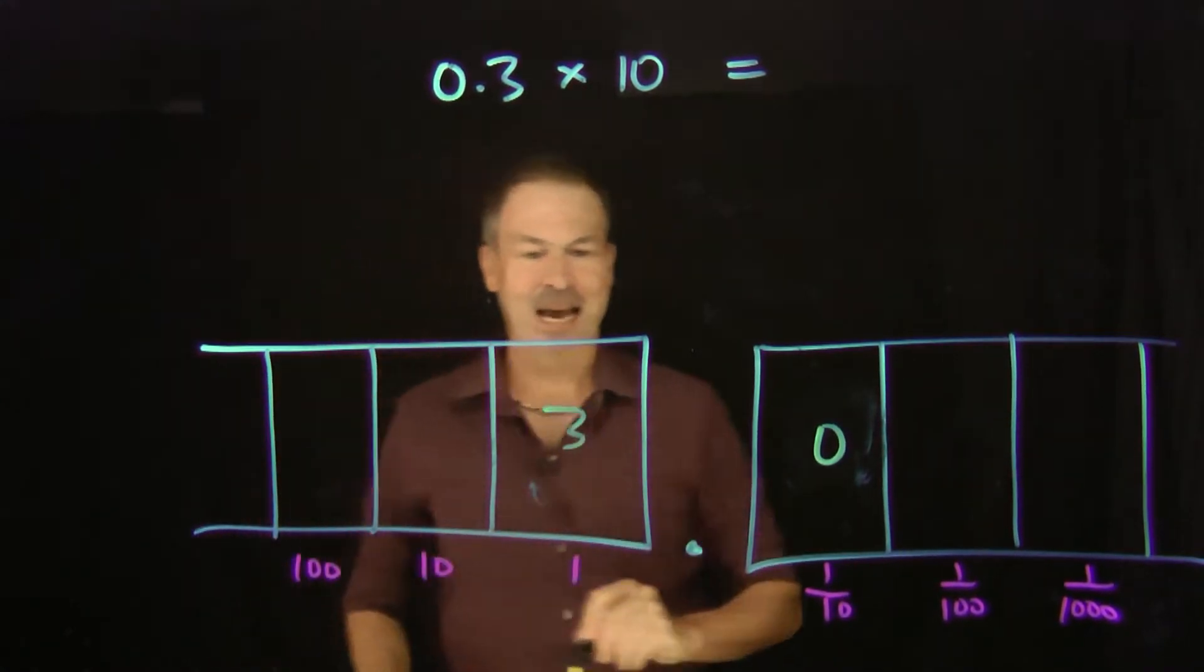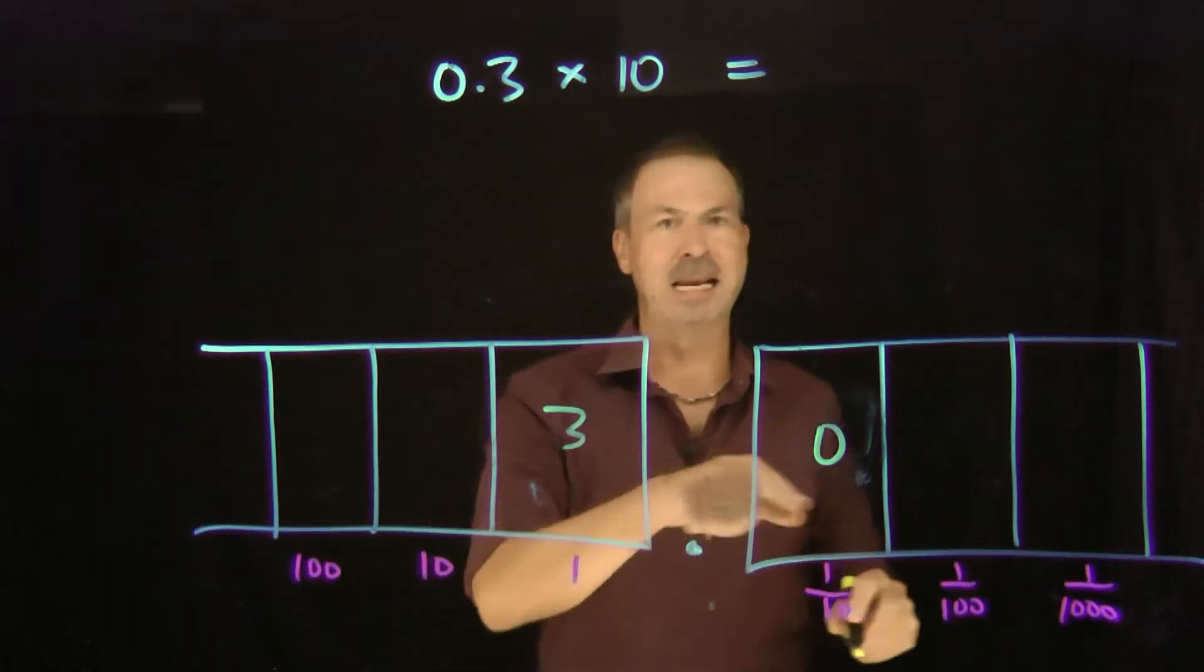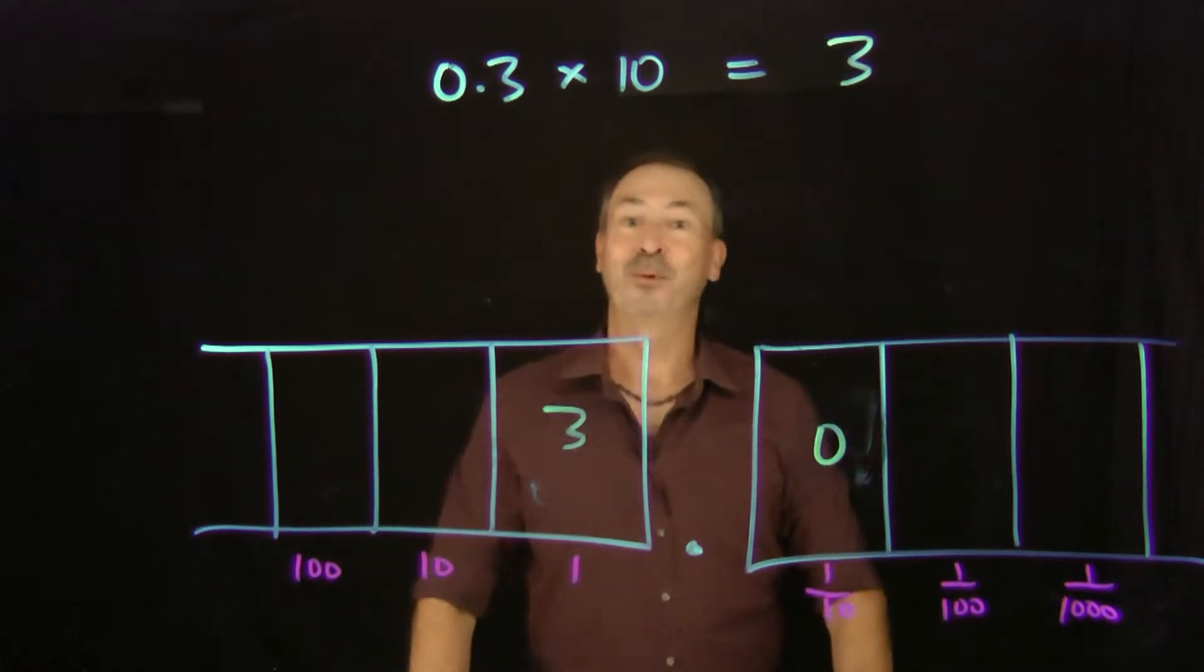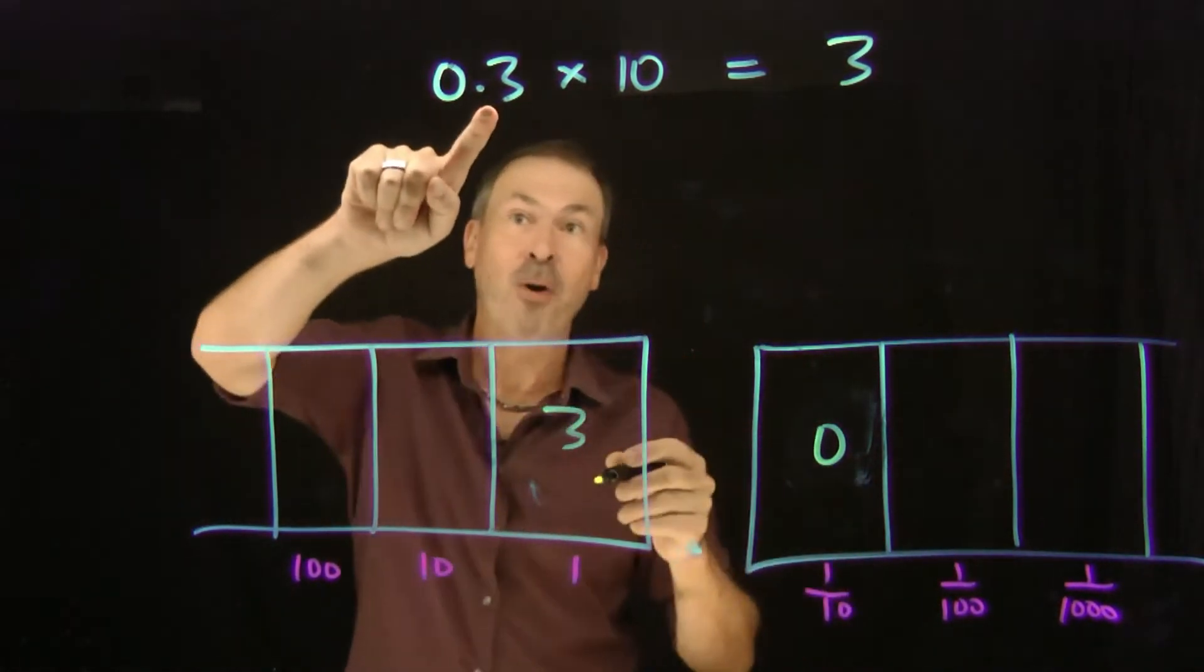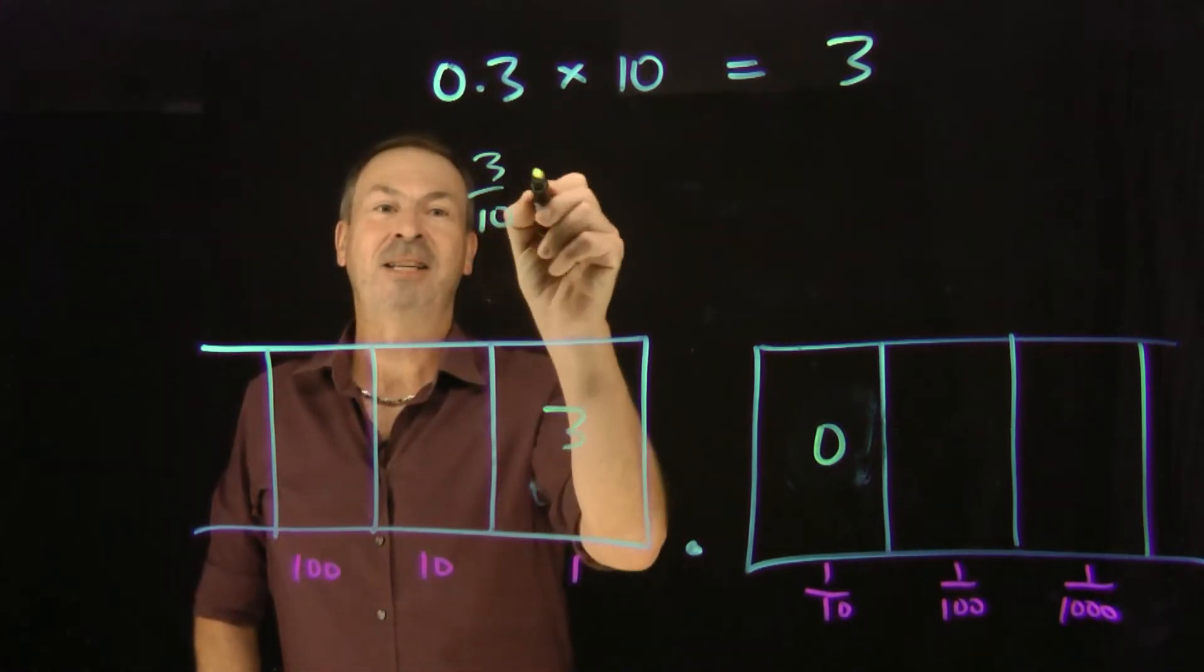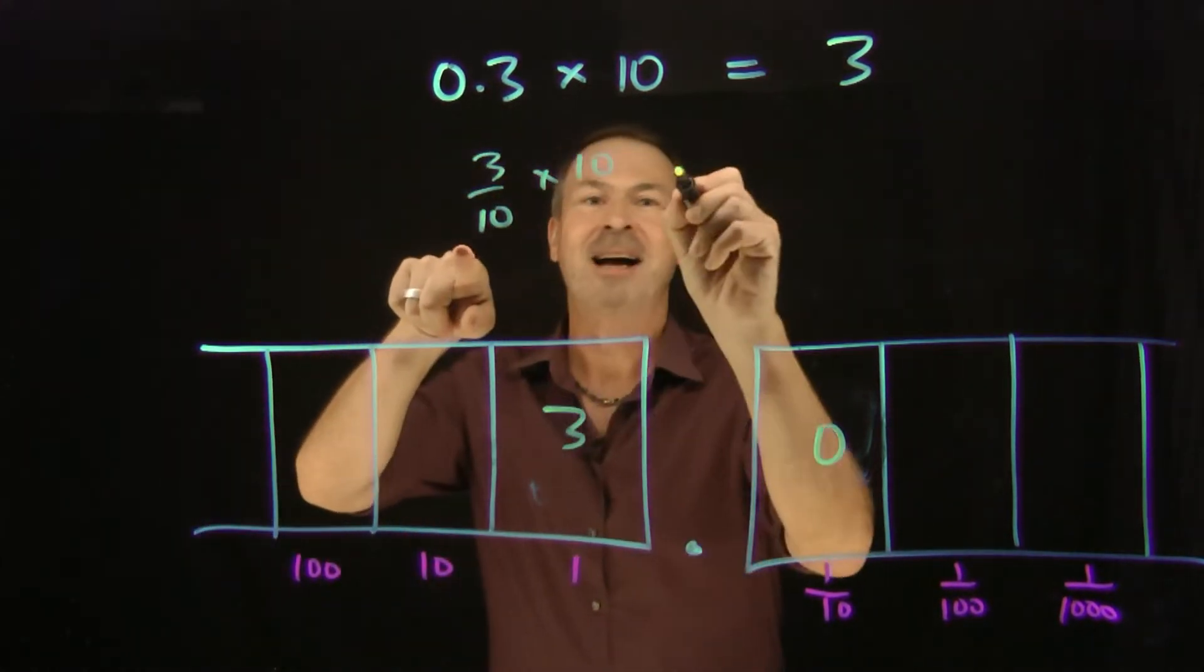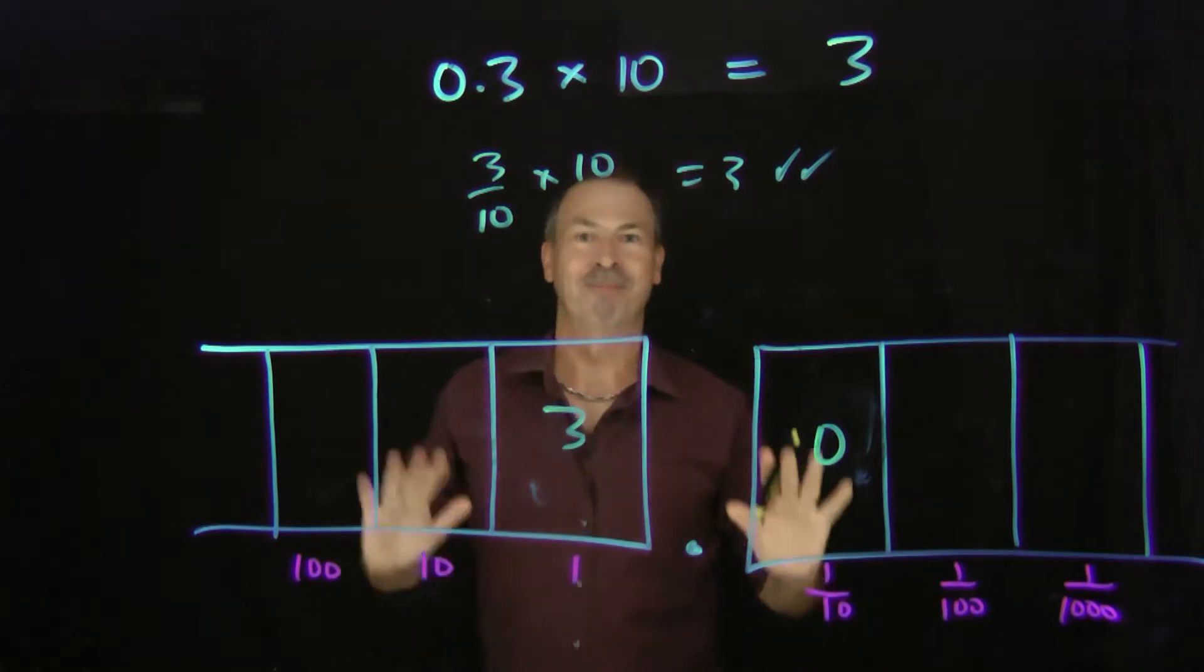So now I can see the answer is going to be 3 ones and nothing else. Maybe I'll just write 3. Great! If I thought about it, that has to be the answer. Because after all, 0.3 is 3 tenths. So I take 3 tenths and multiply it by 10. I see I will get the answer 3. Grand and good.